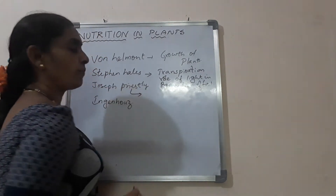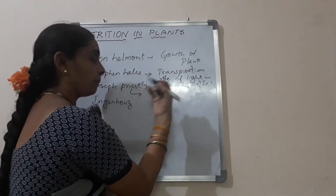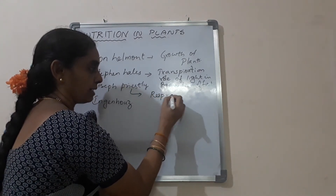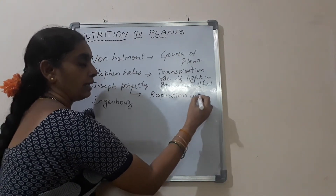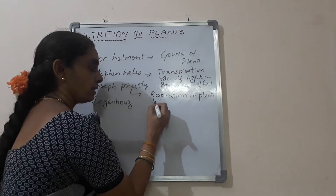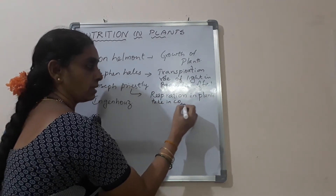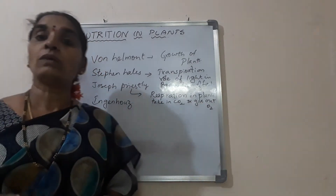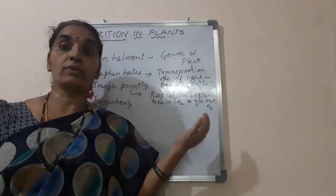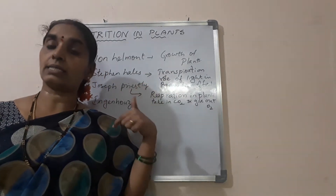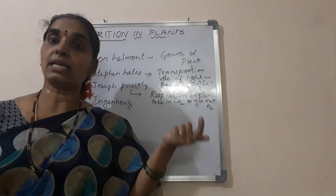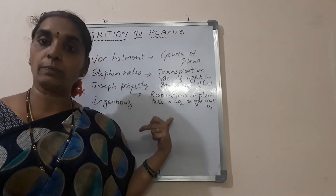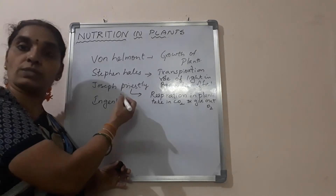Next, Joseph Priestley. He said that what plants do is reversed by animals. Plants take in carbon dioxide and give out oxygen, whereas animals take in oxygen and give out carbon dioxide. So plants are making the air pure, whereas animals are making the air impure. That was said by Joseph Priestley.